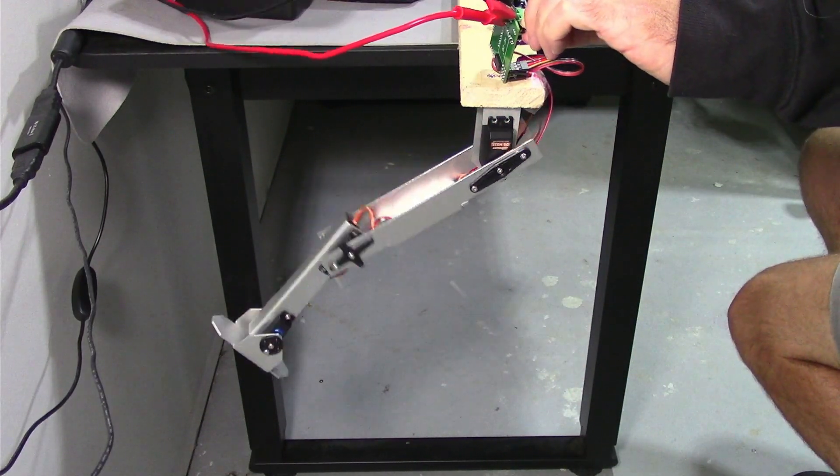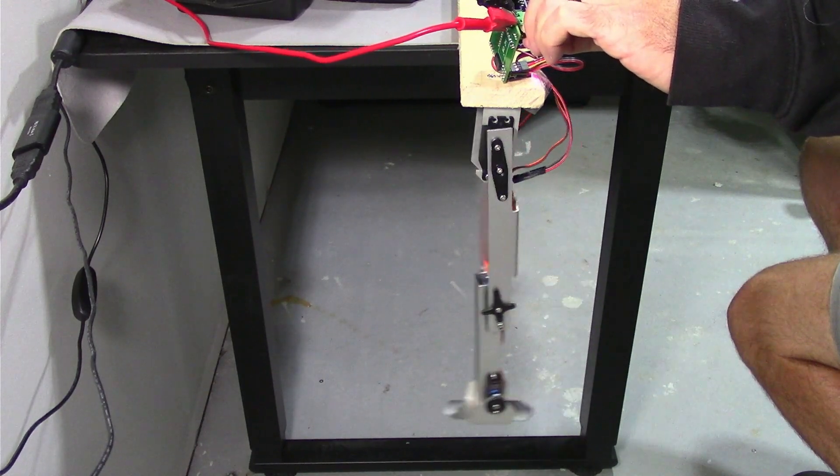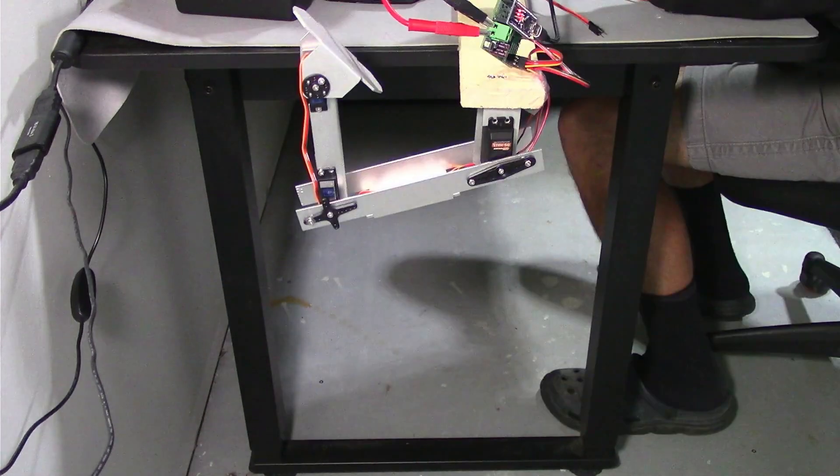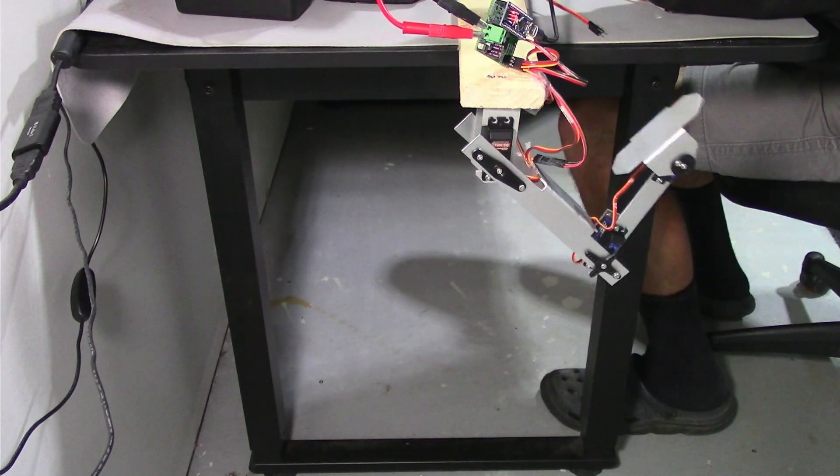I wrote a program to loop through all the ranges on each servo motor, and honestly this movement looks cooler than any walking sequence I tried to come up with. If you're a regular viewer, you might recognize this leg. It's based off of our three-legged walking robot Tripedal.